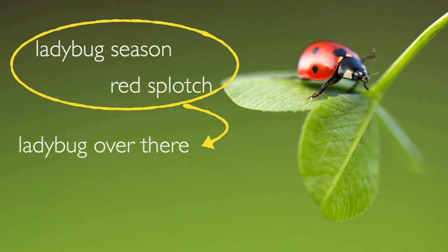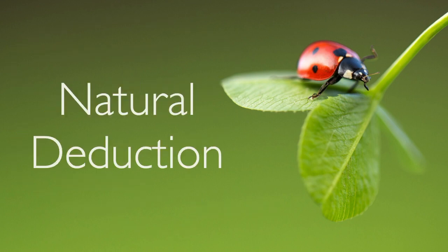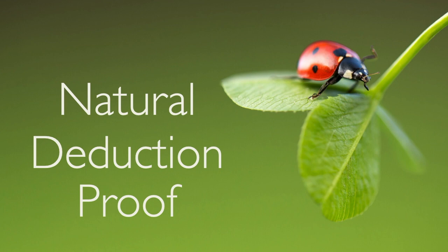Sometimes we string together a series of inferences. After inferring that it's a ladybug, I might remember that my son loves bugs and draw the inference that it's a good idea to show it to him. In logic, we call this practice of reaching a conclusion through a series of step-by-step inferences natural deduction — natural because it's roughly how we do our thinking in real life. A natural deduction proof just takes this rough, everyday process and makes it very precise.